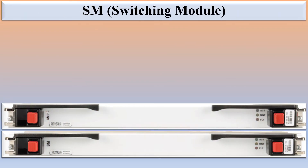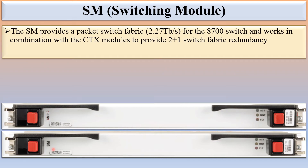The SM is the Switching Module. There are 2 types: SM and SMHD. The difference is that capacity and line module rate are increased with SMHD. The SM provides a packet switching fabric of 2.27 Tbps for the 8700 switch and works in combination with the CTX module to provide 2+1 switch fabric redundancy. They are hot swappable, so if a switching module is faulty you can pull it out and insert a new card.